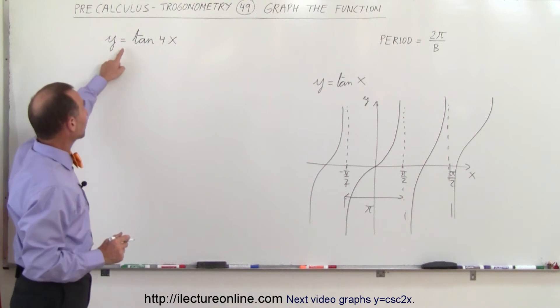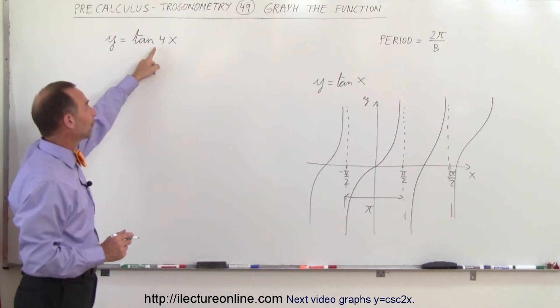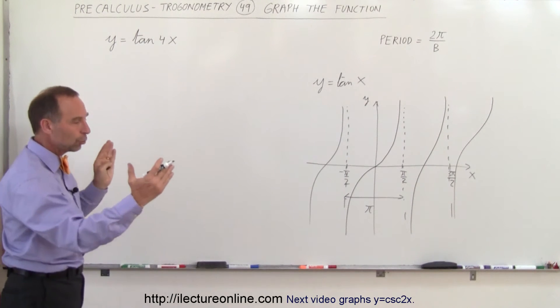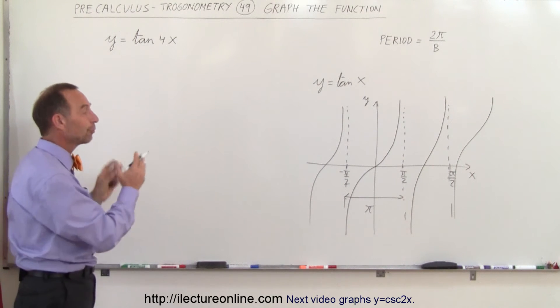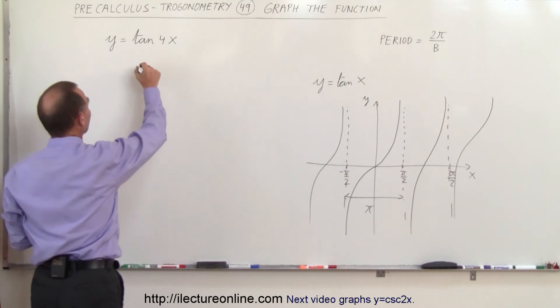So now what happens when we have the tangent of 4x, it reduces the period down to one fourth its normal. So what that then looks like,